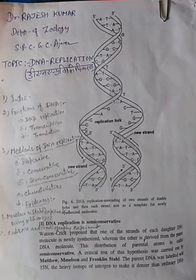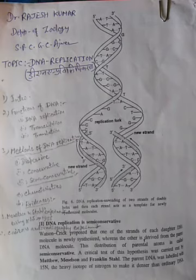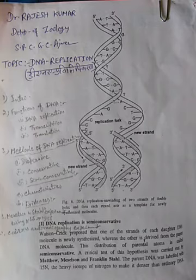In these, thymine pairs with adenine and guanine pairs with cytosine. Each polynucleotide chain serves as a template for the synthesis of a new DNA molecule.